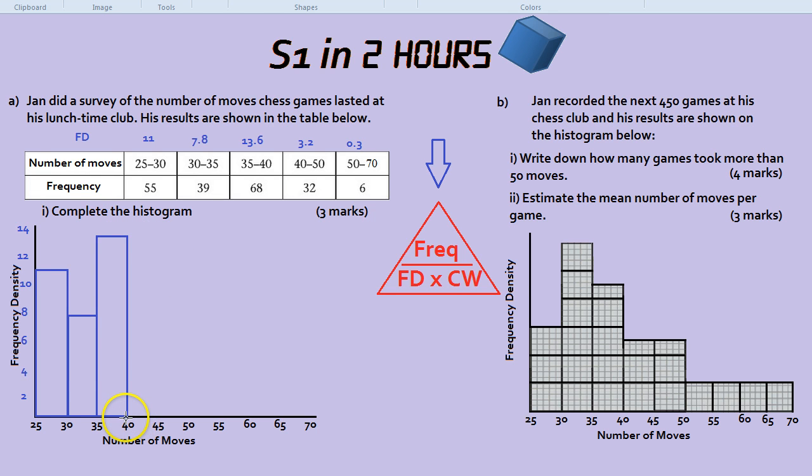40 to 50 goes up to 3.2. So it's a bit wider and shorter. That's what tends to happen with histograms. Wider and shorter. And finally, the last group, 50 to 70, only goes up to 0.3, which is very low. So like that. And there we go. We've done our histogram.